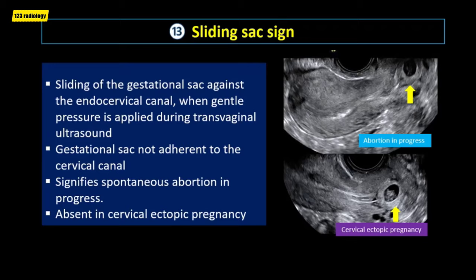The butterfly sign of choroid plexus refers to the normal appearance and shape of the choroid plexus on axial imaging of the fetal brain in the first trimester. This appearance confirms that there are two cerebral hemispheres. Absence of this sign may suggest holoprosencephaly.